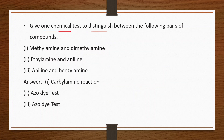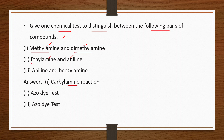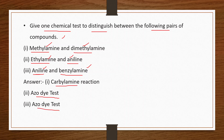To distinguish methylamine from dimethylamine: methylamine is a primary amine, dimethylamine is secondary — use the carbylamine reaction. Methylamine gives the carbylamine reaction while dimethylamine does not. To distinguish ethylamine from aniline: ethylamine is aliphatic, aniline is aromatic — use the azo dye test. Aniline gives the azo dye test while ethylamine does not. To distinguish aniline from benzylamine: aniline is aromatic, benzylamine is aliphatic — aniline gives the azo dye test while benzylamine does not.